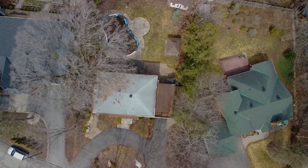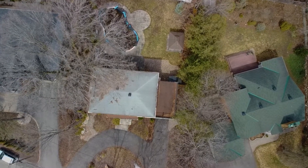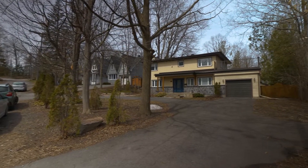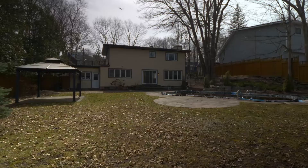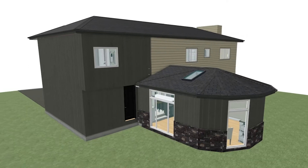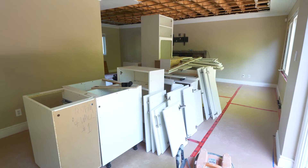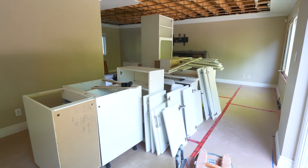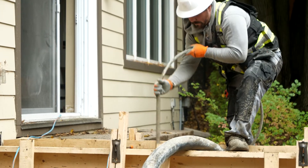We're going to show you some of the problems that we encountered on this project and how we handled them. This is a complete house renovation with a rear addition in the back, approximately 300 square feet, and there's a two-floor addition on the side above a garage. We demoed the interior and are currently prepping the addition for the installation following the concrete pour.